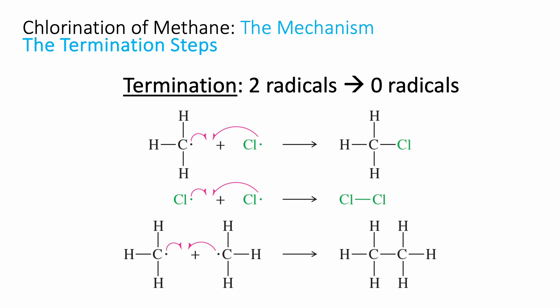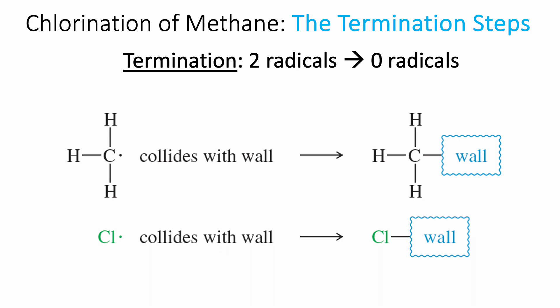Termination steps get in the way of productive reaction. Radicals are extremely reactive — if in a container, they'll react not only with solvent and reagent molecules but also with the container itself, since the container is made of atoms. As radicals collide with the wall of the container, they can get stuck to whatever atoms are in the wall — silicon, oxygen, or boron in the case of glass — and those radicals are used up.